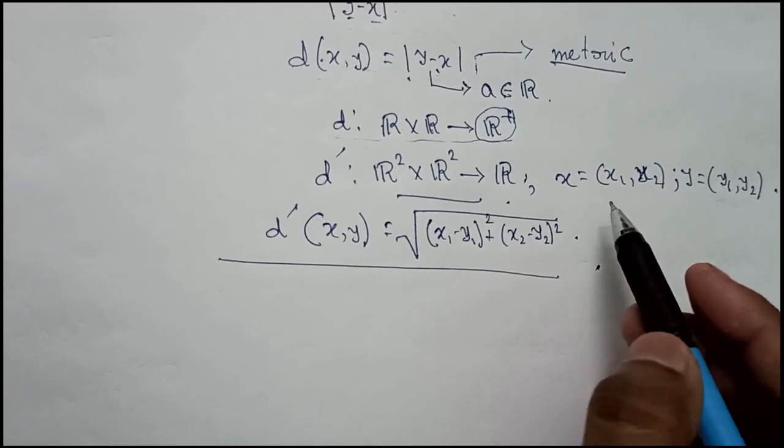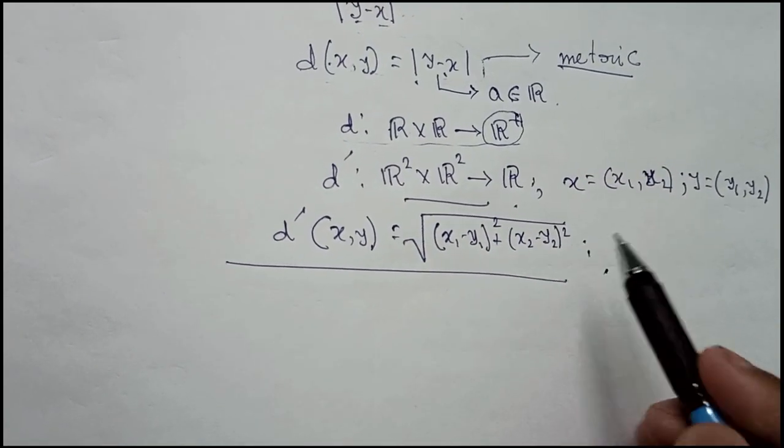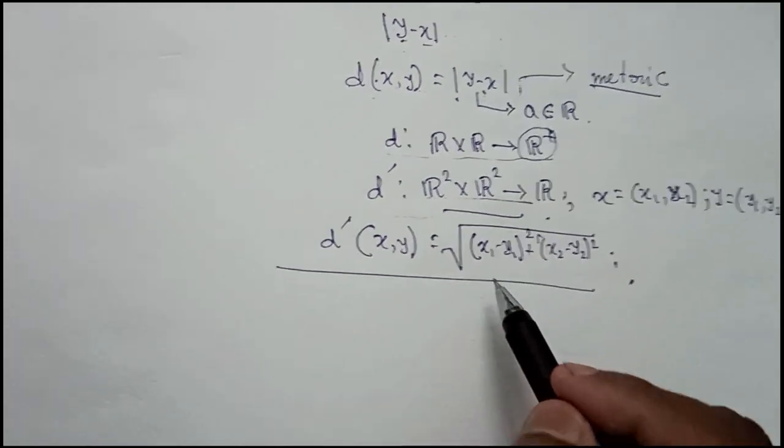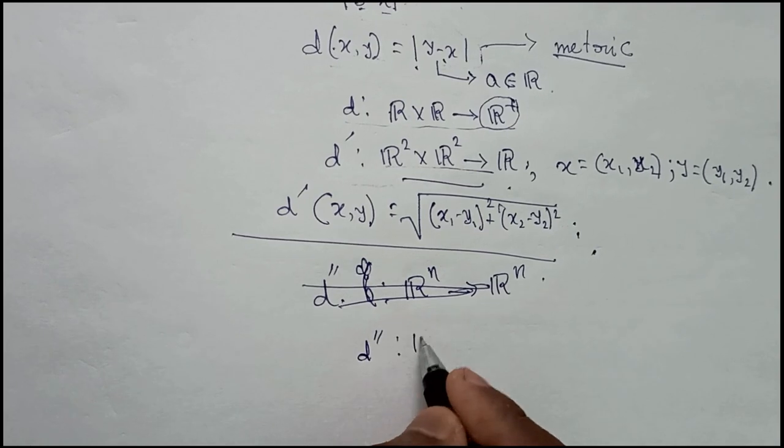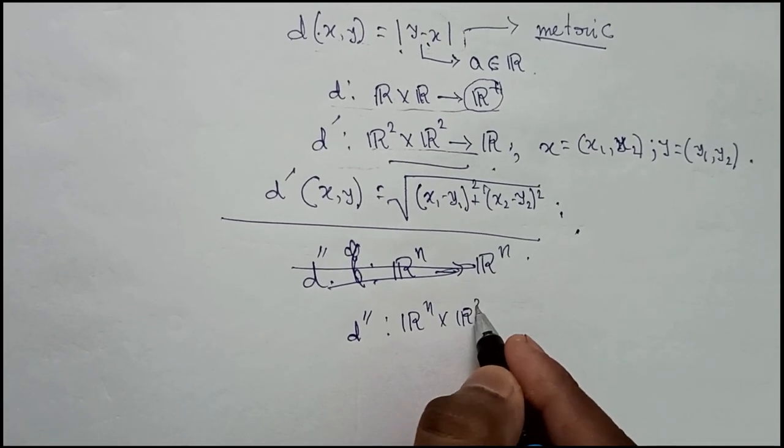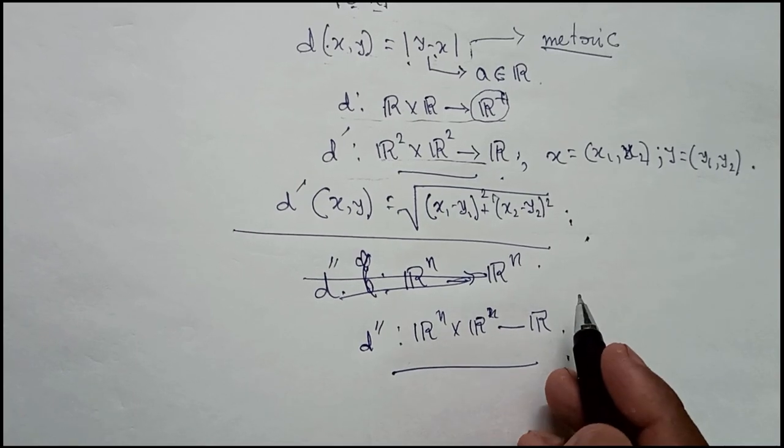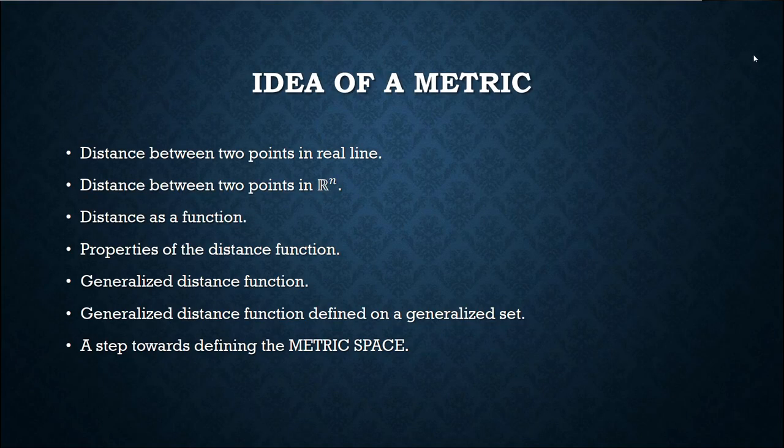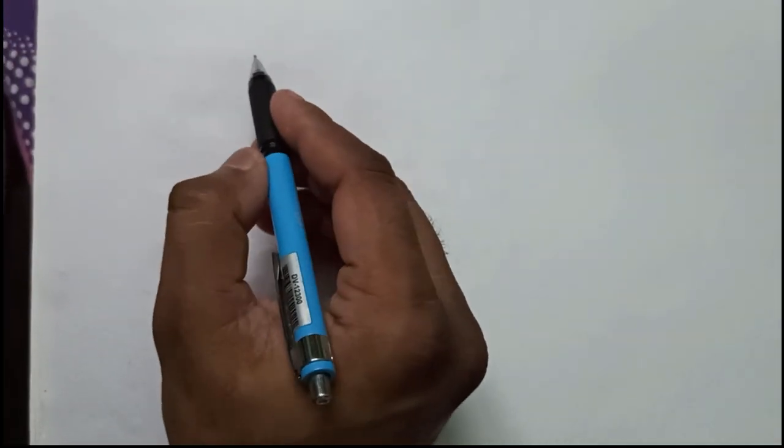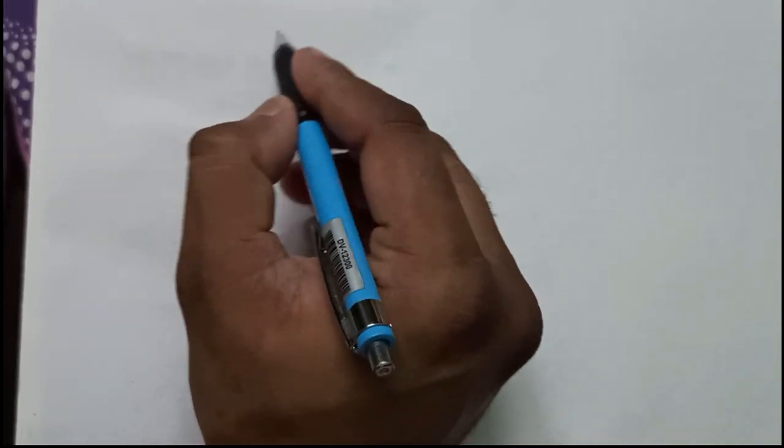So these all functions are actually metric defined on different sets. In this way so we can talk about another distance function which is from R^n cross R^n to R. So these all are distance function or metric function. Now you have seen how the distance between two points in real line can be converted into a function named distance function or a metric. Now this distance function has some properties. What are those properties? Let us explore the properties of this distance function.